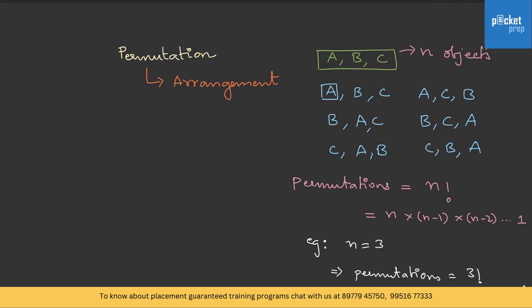It's always a good practice to memorize the factorials at least up to 5. So let me list them out: 1! = 1, 2! = 2 × 1 = 2, 3! = 3 × 2 × 1 = 6, 4! = ...